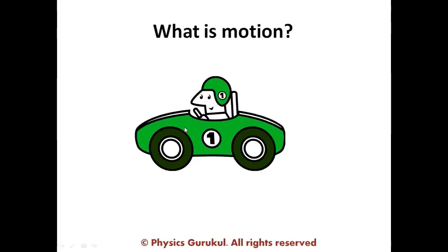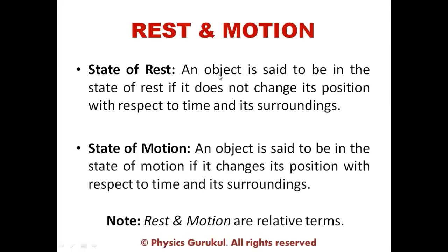If a body does not change its position with respect to time and surrounding, an object is said to be in a state of rest. An object is said to be in a state of motion if it changes its position with respect to time and surrounding. For the person standing on the platform, the train is in motion.